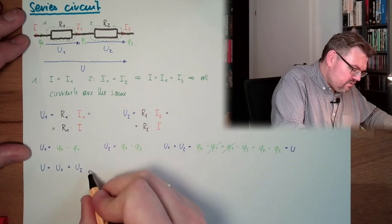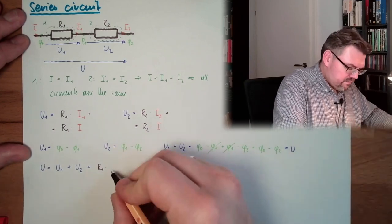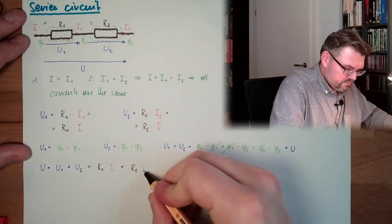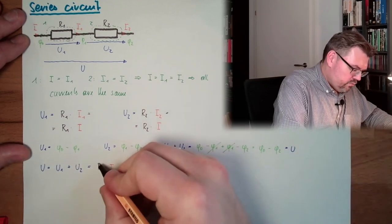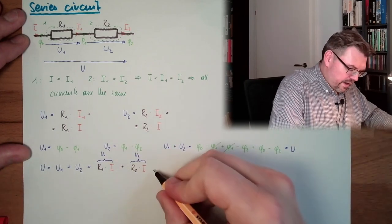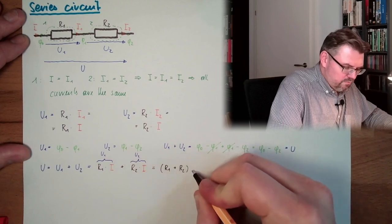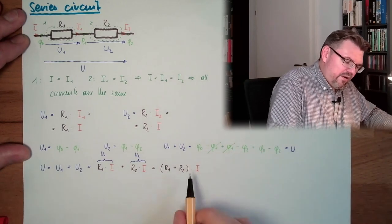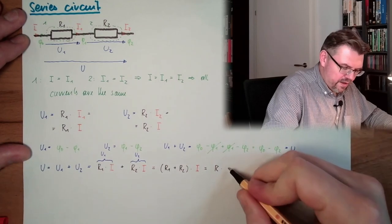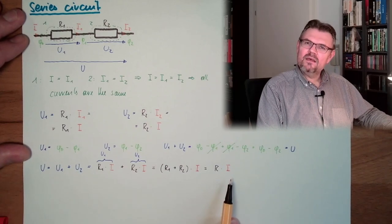Now let's get this into equals R1 multiplied by I, plus R2 multiplied by I. This is U1, this is U2. Now I can write it like that: this is R1 plus R2 multiplied by I. And now I substitute this and call it just R, R multiplied by I. And now have a look, U equals R multiplied by I. This is again Ohm's law.